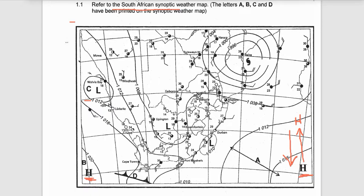The other thing you can note is the cloud cover — you can see the clouds covering the interior of South Africa, overcasted clouds mostly in the eastern side and interior of South Africa, around the heat low.